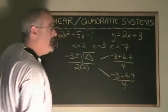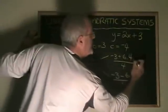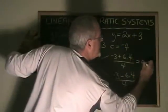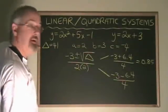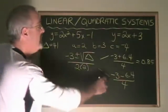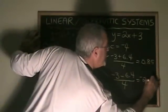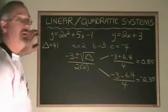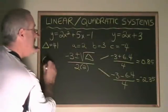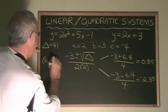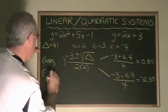Negative 3 plus 6.4 is 3.4, and 3.4 divided by 4 equals 0.85. Negative 3 minus 6.4 is negative 9.4, which when divided by 4 gives negative 2.35. These are the x-coordinates of our solution to our system. We have 0.85, and we have negative 2.35.